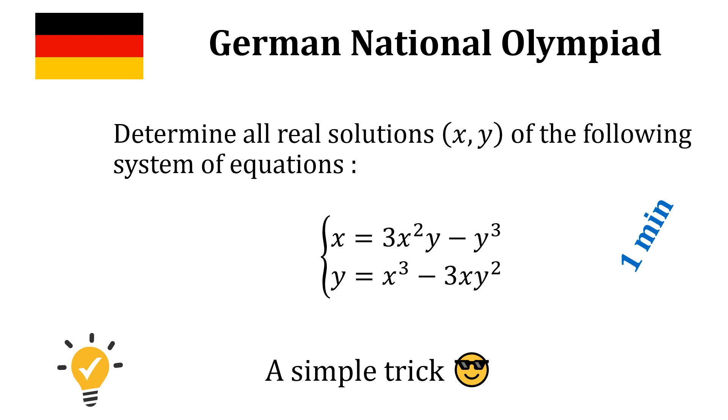x equals 3x²y minus y³, and y equals x³ minus 3xy². At first glance, this might be intimidating, but I'm going to show in this video how to get away with a simple trick.